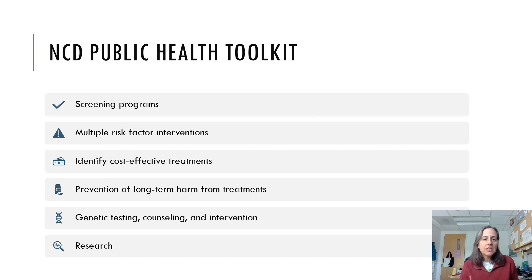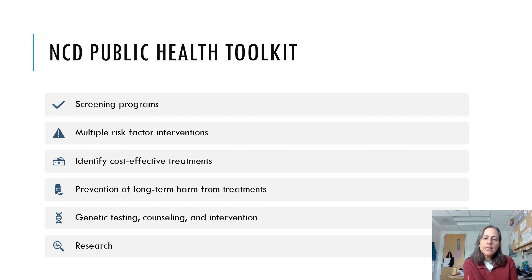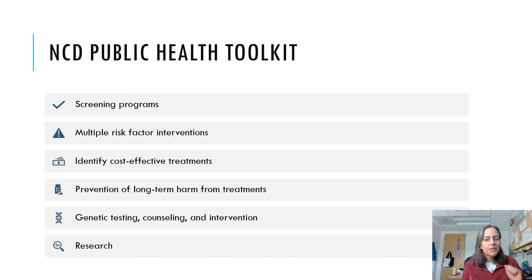In sum, for non-communicable diseases, our toolkit includes screening programs and test performance characteristics including positive and negative predictive values. Risk factor interventions have made enormous strides in reducing disease in the population. We look at cost-effectiveness and the wise use of our resources, and make sure we're not accidentally causing harm — the road to Hades is paved with good intentions. There's the piece about genetic testing, already much in use but still in its infancy. And research underpins everything we do in public health and medicine. That's it for non-communicable diseases — communicable diseases will be next.